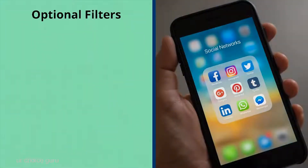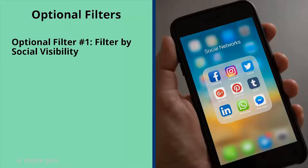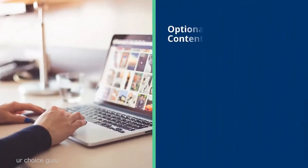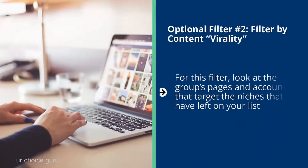Optional filters: while the five filters above should be enough to develop a viable online business, if you want to turbo-charge your results, apply these additional filters. Optional filter number one: filter by social visibility. Enter your keywords on major social media platforms like Facebook, Twitter, YouTube, Pinterest, and Instagram. Can you tell if there are a lot of existing accounts that talk about your niche? If not, delete the niche from your list.